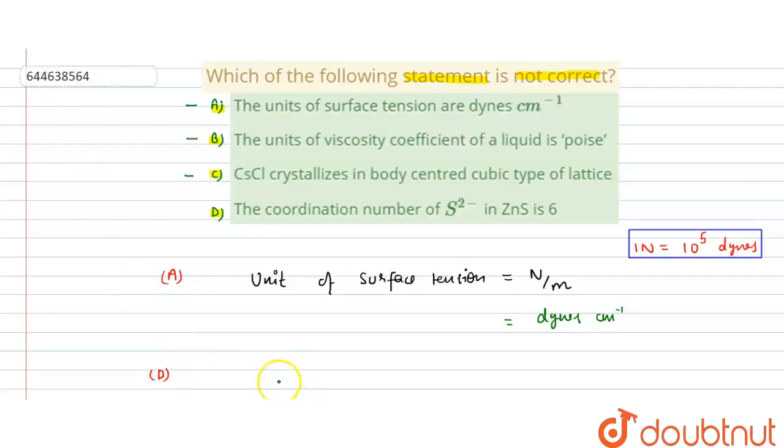In D part, the coordination number of S²⁻ in ZnS is equal to 4, not 6. Why 4? This is in the FCC structure. So using this result, D is the correct answer.